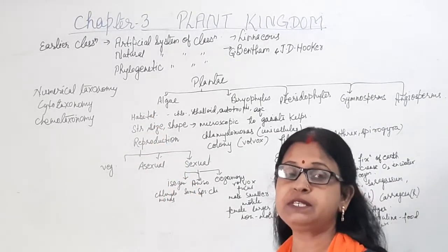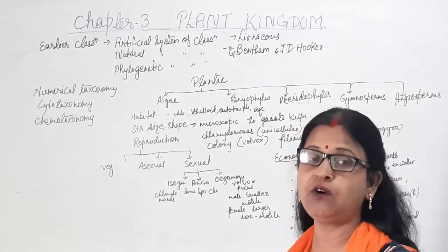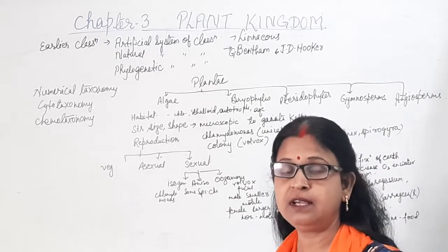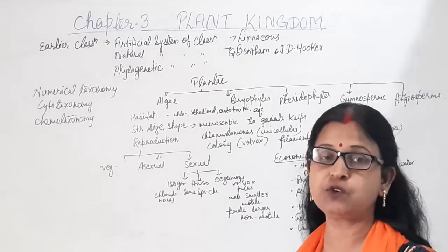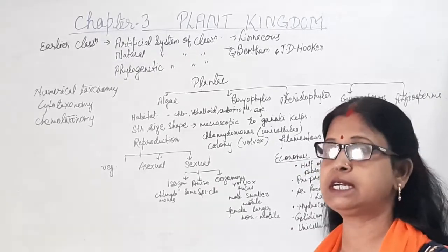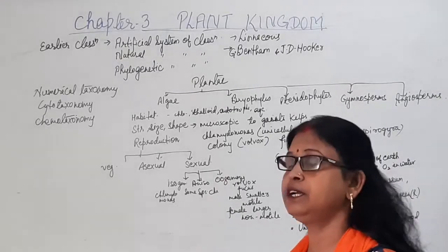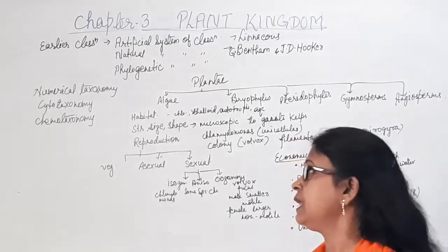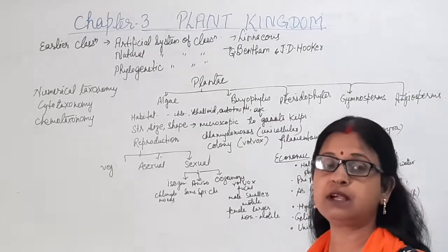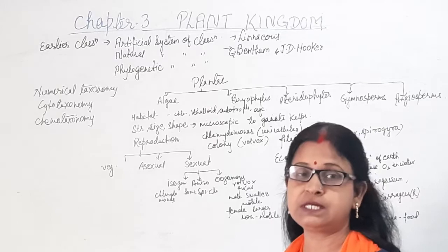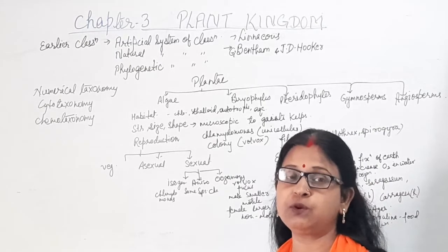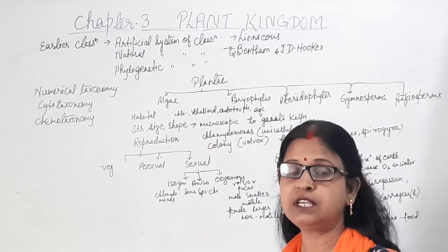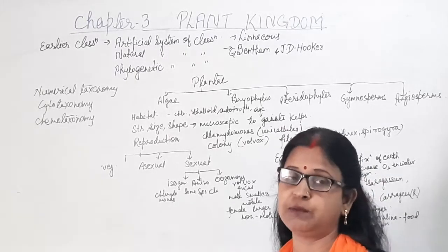Cytotaxonomy is based upon the study of cytology — that is, the structure and behavior of the cell, chromosome number, chromosome structure, etc. — all used as input for taxonomy. Chemotaxonomy considers the chemical constituents of the cell and the ratio of those chemicals for classification.